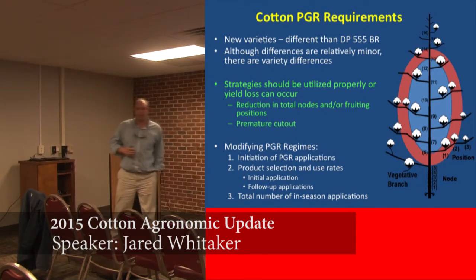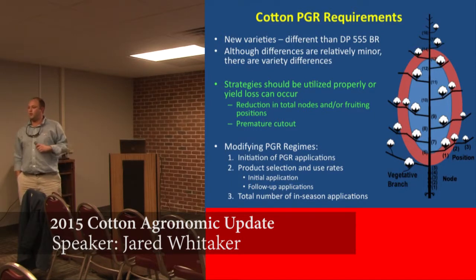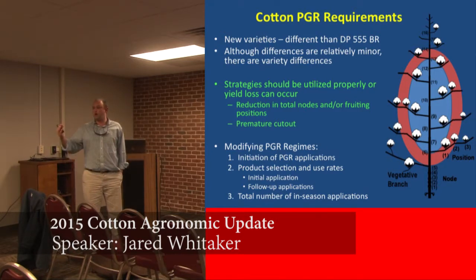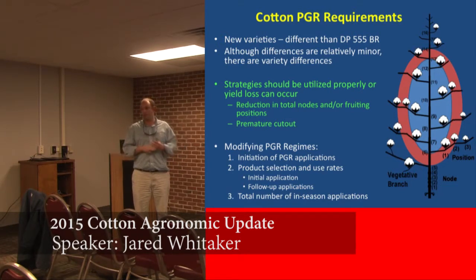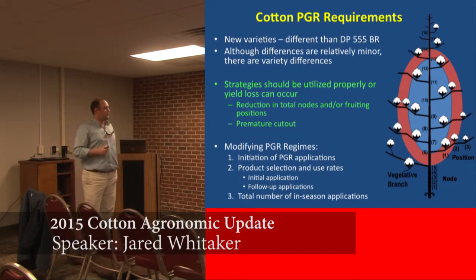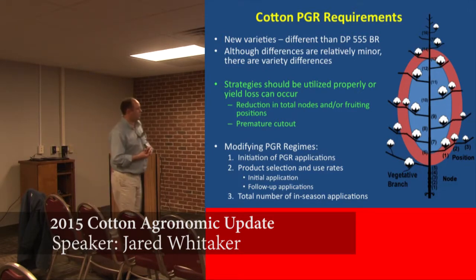Once we make a variety selection decision, what's the next thing to think about? Management — are there things we can do to manage a variety differently to get better performance, or things we need to worry about as far as not hurting a particular variety? From an agronomist standpoint, that's PGRs. The big thing for us was how do we manage cotton when we're not planting 555? Those of you who grew DP 555 BG/RR know it was a very aggressive variety that had to be managed extremely intensively. Most of the new varieties have less growth potential and ultimately need to be managed a little lighter so that we don't hurt cotton yields.